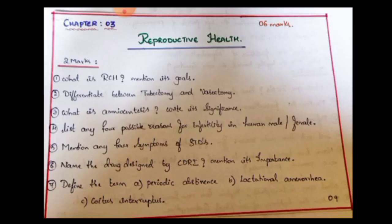Now let's move to the last chapter of Unit 1: Reproductive Health. This chapter has 6 marks total — 2 marks here. Expected 2-mark questions: What is RCH? Mention its goals — RCH stands for Reproductive and Child Health; mention its main goals and objectives. Next: Differentiate between tubectomy and vasectomy — this is the most important question on surgical methods.